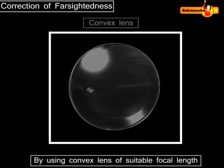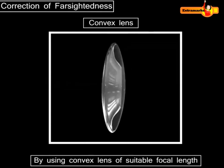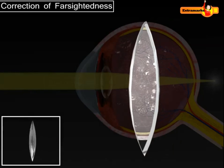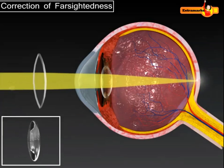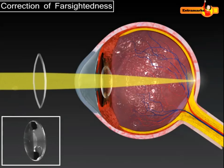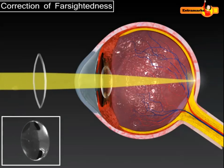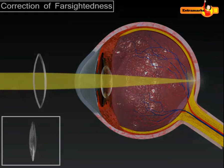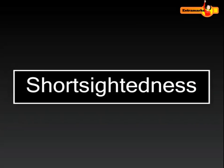The image is formed behind the retina. This defect can be corrected by using a convex lens of appropriate focal length. The convex lens helps to change the way light rays enter into the eyes and bend after refraction through the eye lens to form an image at the retina.